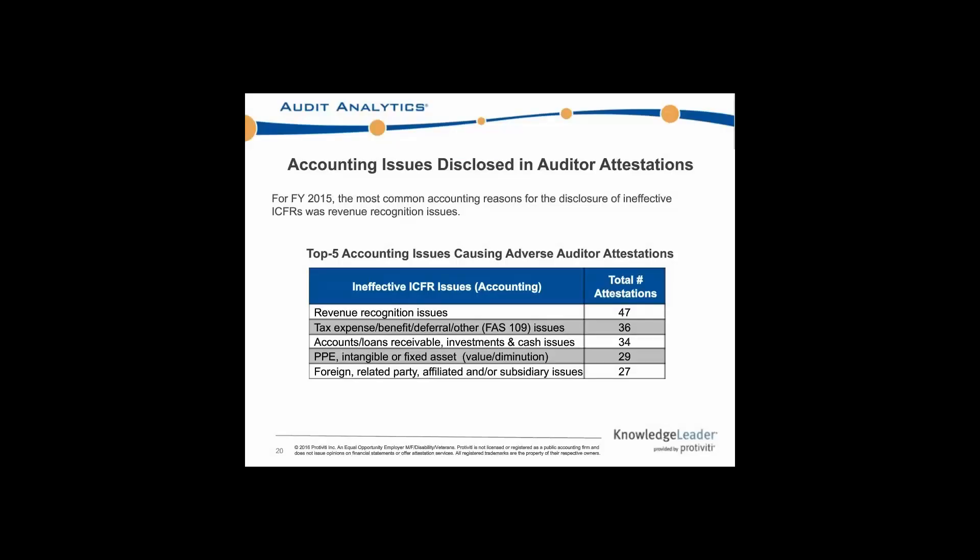We have a very smart group here. The top accounting-related issue reason for an adverse auditor attestation to ICFRs was in fact revenue recognition issues — about 47% of the attestations cited that. Roughly 20% of all companies that disclosed ineffective ICFR listed a revenue recognition issue. That was followed by tax-related issues; closely behind was accounts and loans receivable or investment and cash issues; then PPE, intangible, or fixed asset issues; and finally, foreign related party or subsidiary issues.